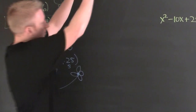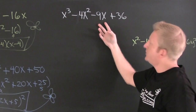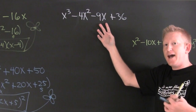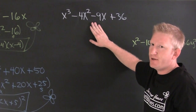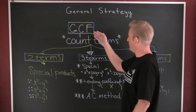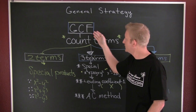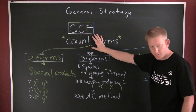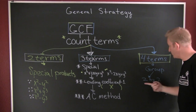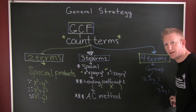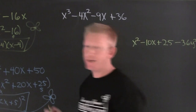Next example. First rule: take out a common factor — it doesn't appear there is one. Count the number of terms: four terms. Strategy: grouping, two by two. If that doesn't work, try three by one.